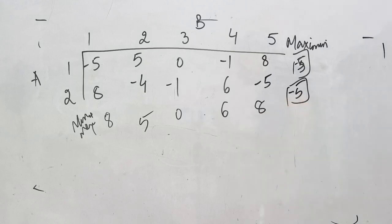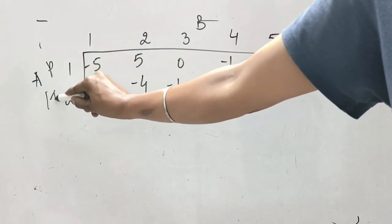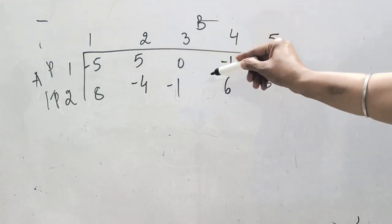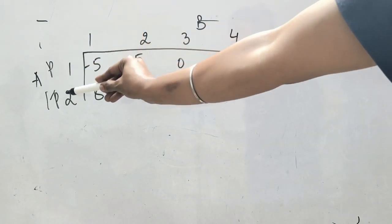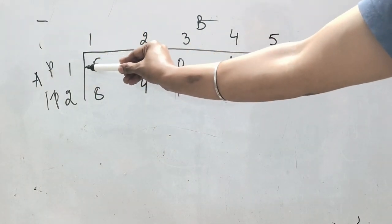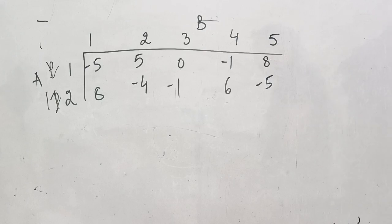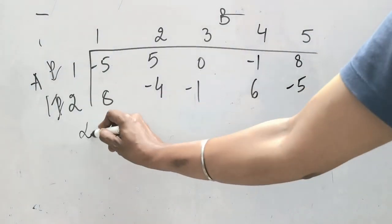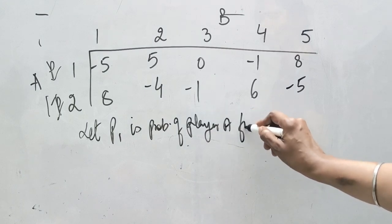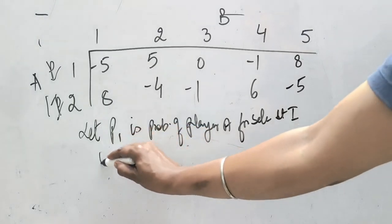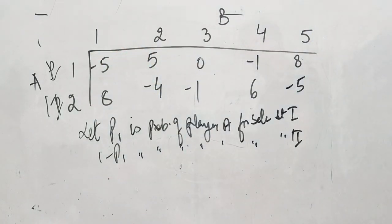To apply the graphic method, assign a probability to the player with two strategies. Since player A has two strategies, let p₁ be the probability that player A selects strategy one, and (1 − p₁) be the probability that player A selects strategy two. Write: let p₁ = probability of player A selecting strategy one, and (1 − p₁) = probability of player A selecting strategy two.